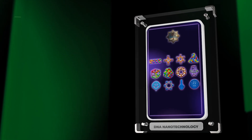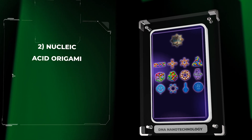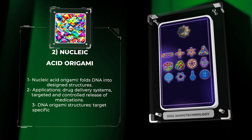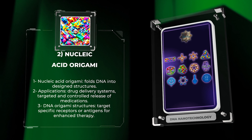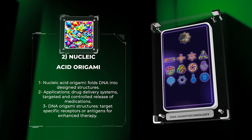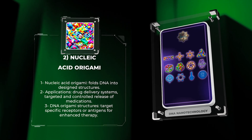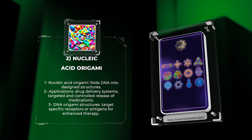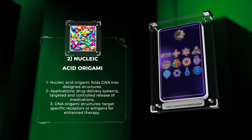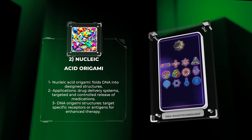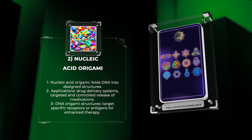Nucleic acid origami is a fundamental technique in DNA nanotechnology that allows for the precise folding of DNA strands into designed structures. It involves the rational design of DNA sequences and their complementary base pairing to create intricate structures with nanometer-scale control.